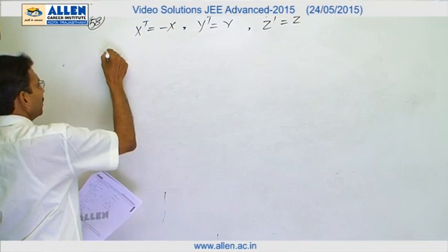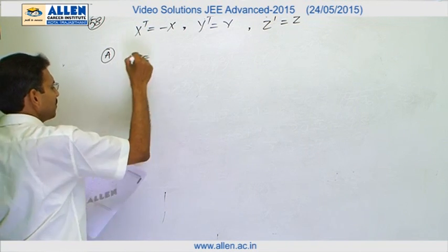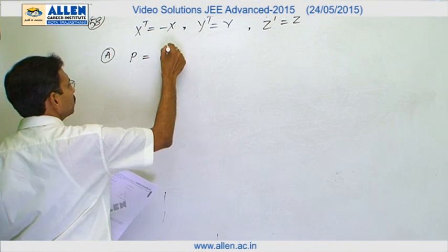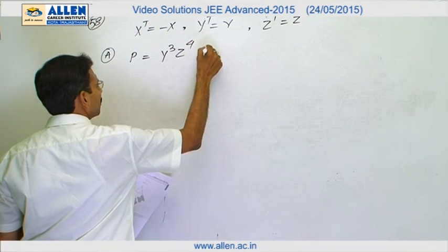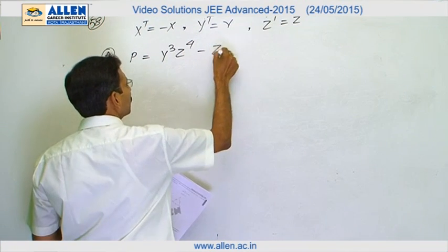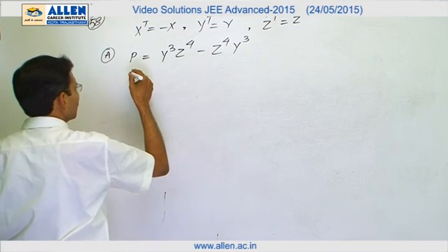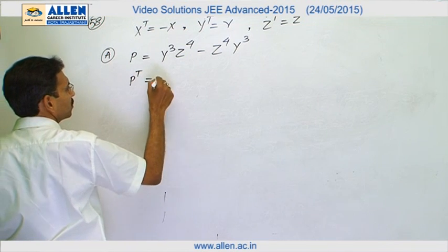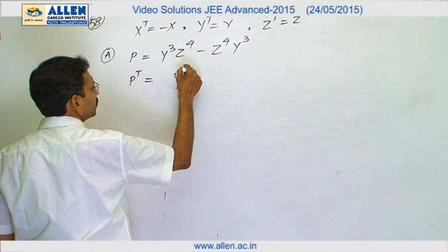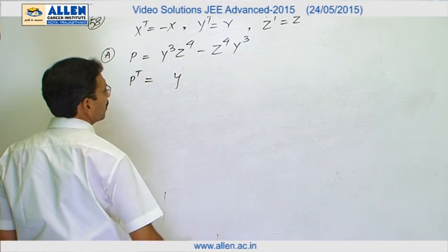Now for option A, we will assume it as P matrix. It is Y^q Z^4 minus Z^4 Y^q. Take the transpose.